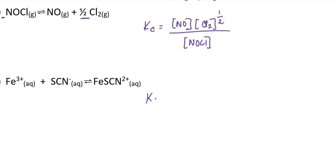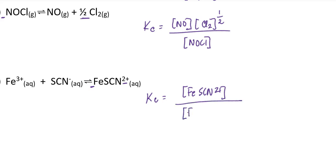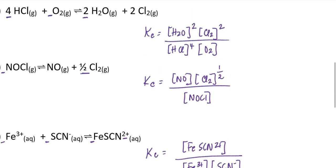For the last example, I'm going to take the concentration of the product. Notice that although the product has a charge of 2+, there is no stoichiometric coefficient, so I would not raise this product concentration to any explicit power — I leave it as 1, understood. Then for the reactants it would be the concentration of iron 3+ times the concentration of SCN minus. SCN minus is the thiocyanide ion, and this equation is 1-to-1 across the board, so all concentrations are to the first power.